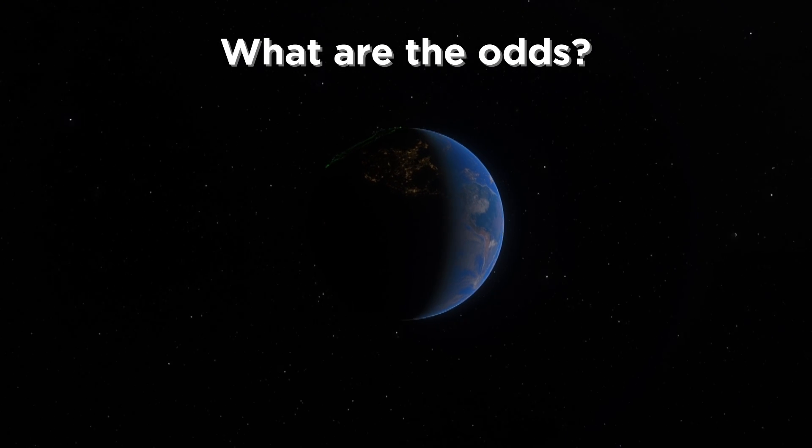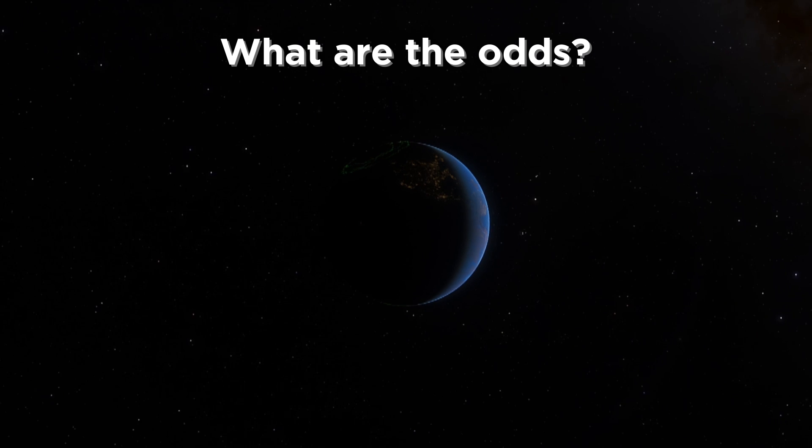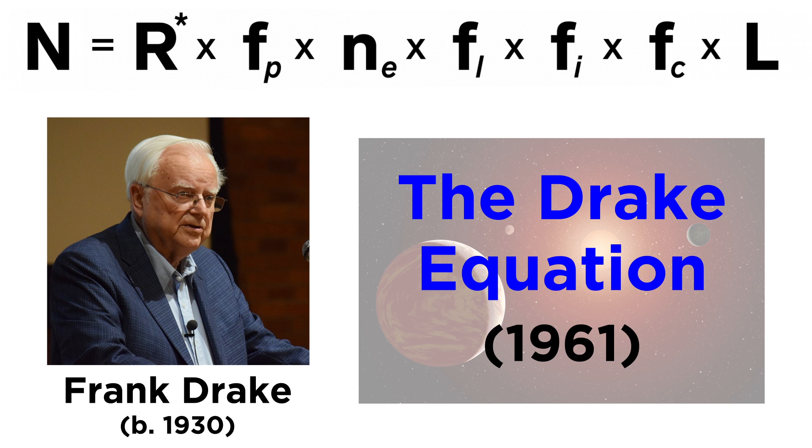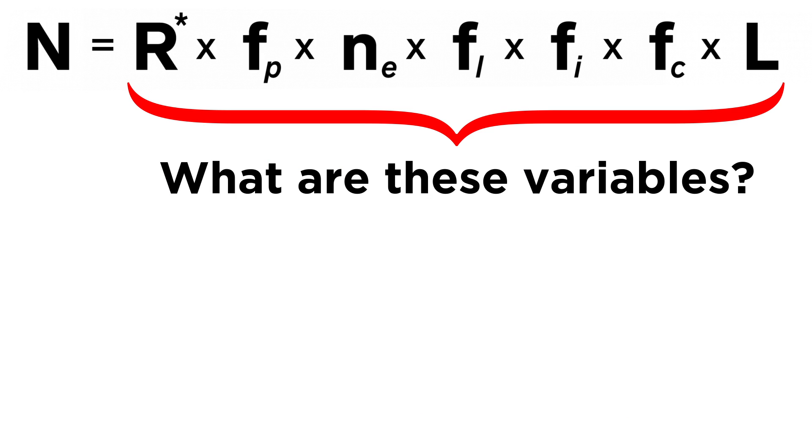It may seem absurd to try to calculate the odds of such things, but that is precisely what astronomer Frank Drake tried to do in 1961 with his Drake equation. It outlines a way to calculate N, the number of active, intelligent civilizations in the Milky Way available for communication.